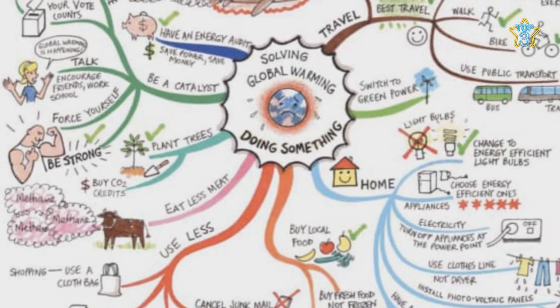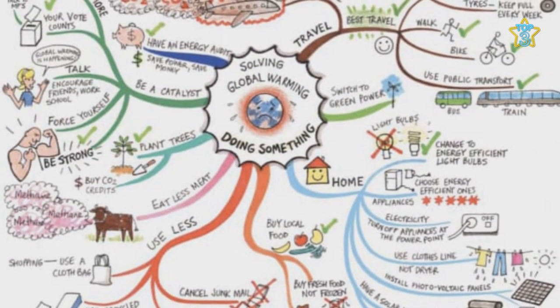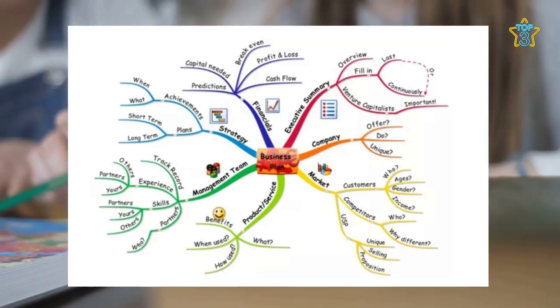Now, draw branches from this heart, each representing a related idea or subtopic. It's like drawing roads that connect different towns. These branches can further branch out, representing specifics or details of the related ideas. Imagine each branch as a path leading to a specific destination.